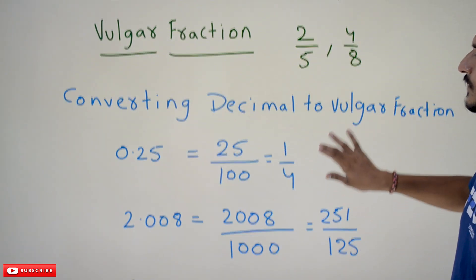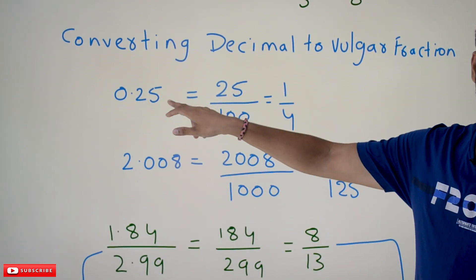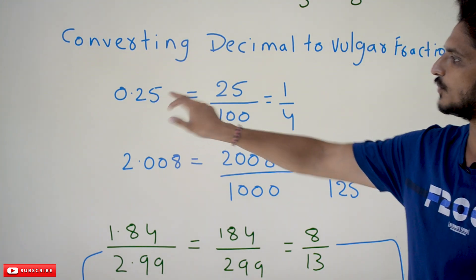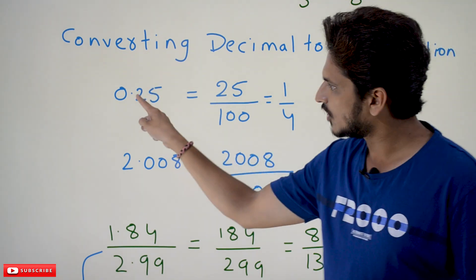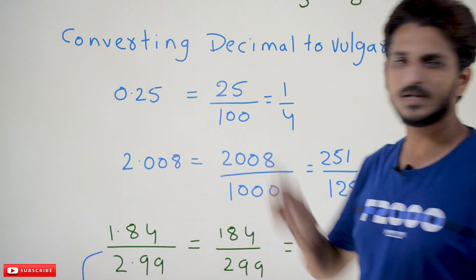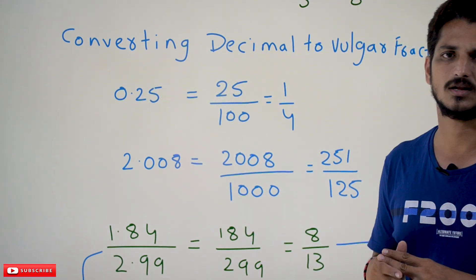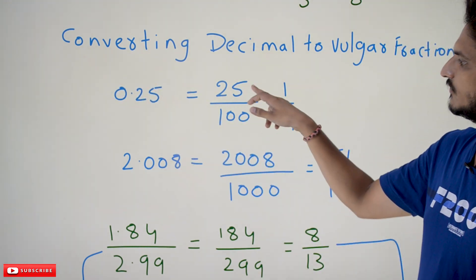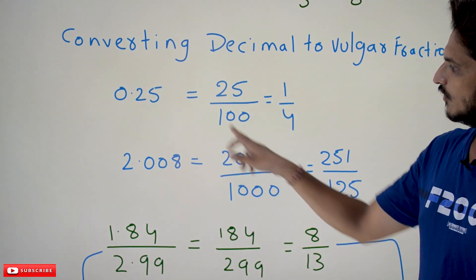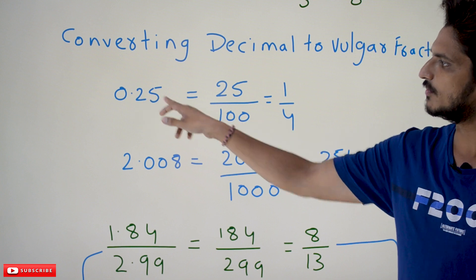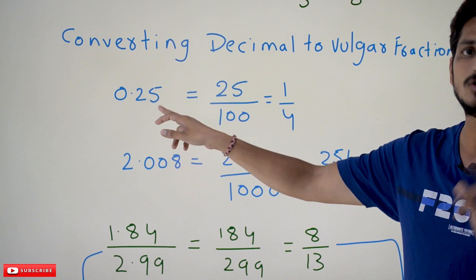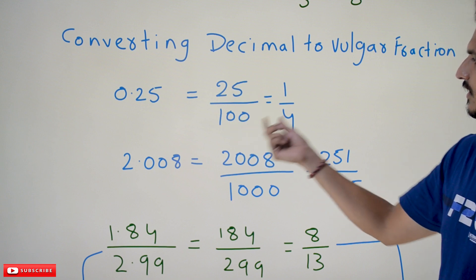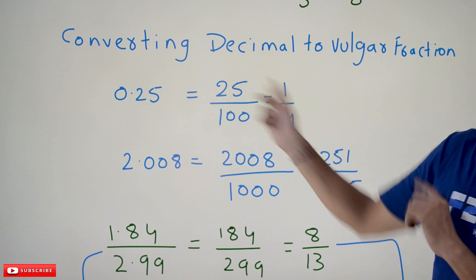For example, 0.25 is given. After the dot, how many digits are there? Two digits. So we remove the dot and write 25, divided by 1 followed by two zeros — that is 25/100, which equals 1/4. Both are the same value.